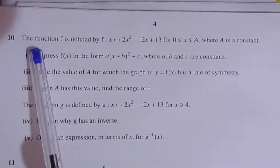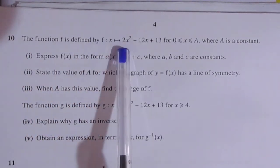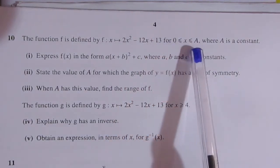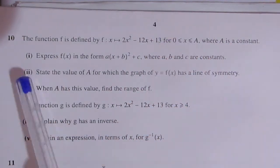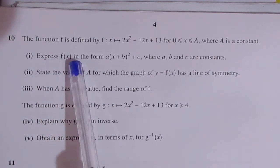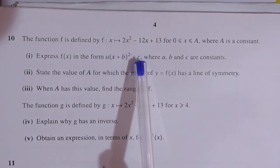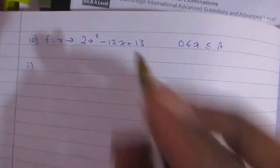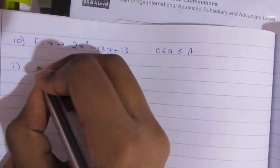And on to the 10th question. The function f is defined by f(x) equals 2x squared minus 12x plus 13, where x is between 0 and a, and a is a constant. Express f(x) in the form a(x + b) squared plus c, where a, b, and c are constants. That is basically telling us to complete the square.